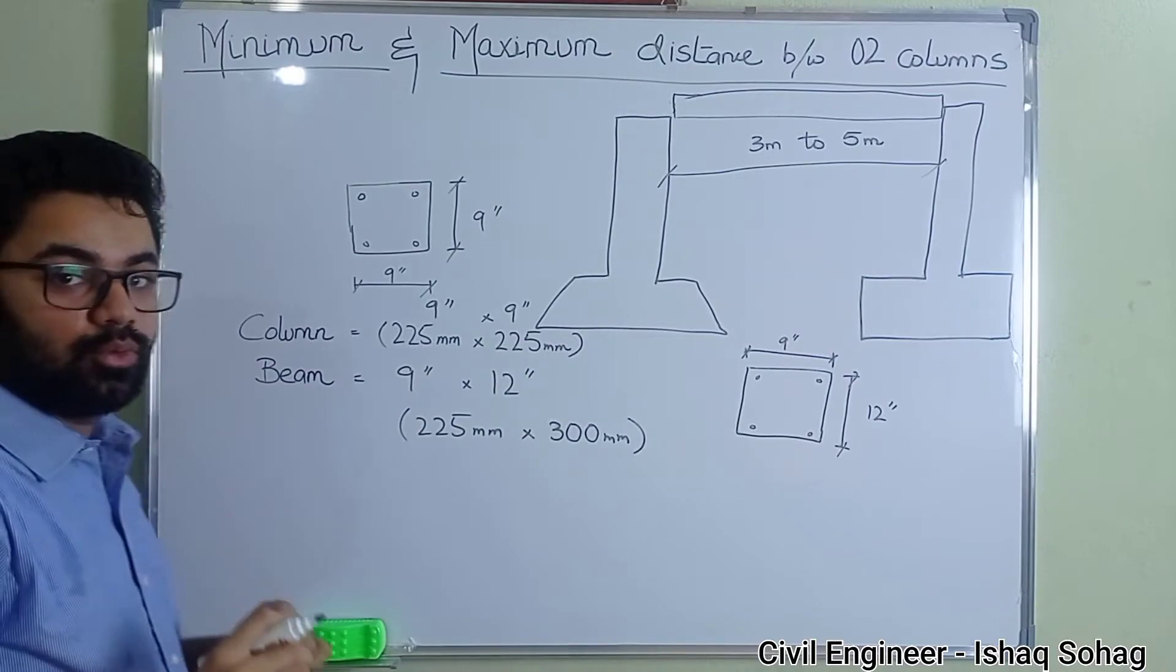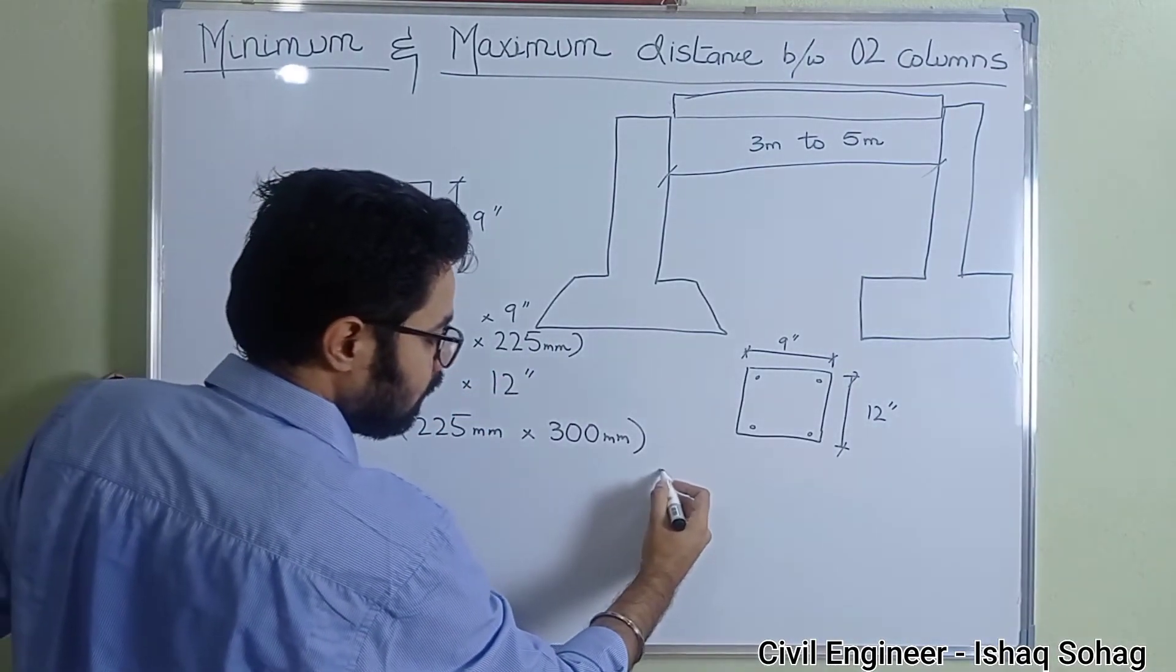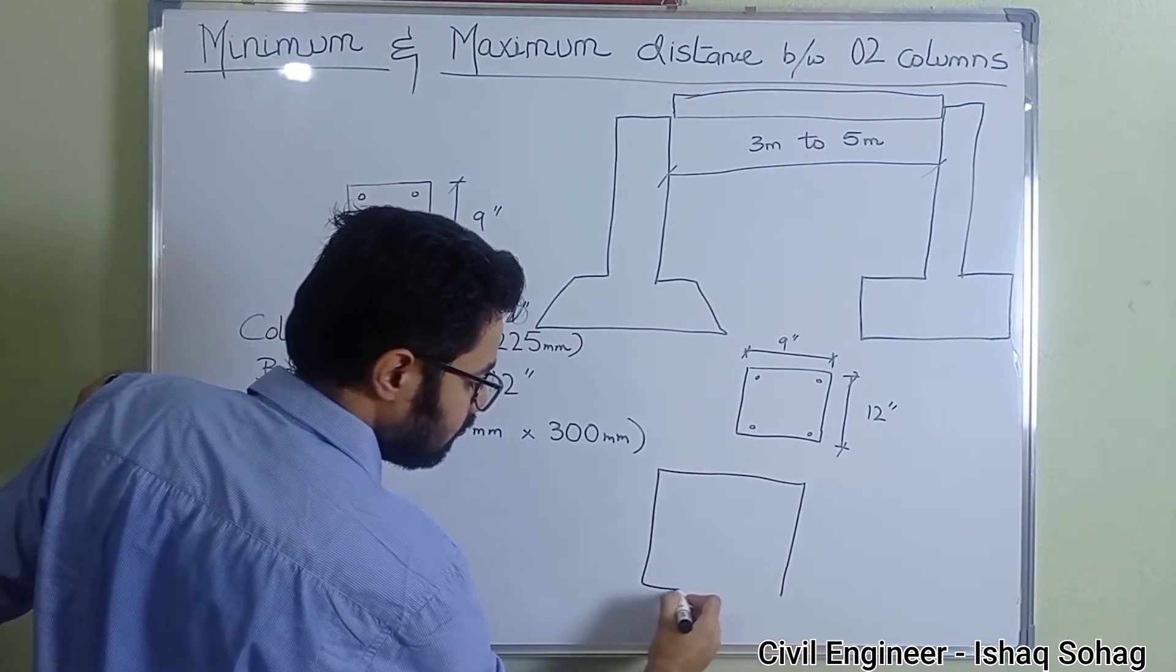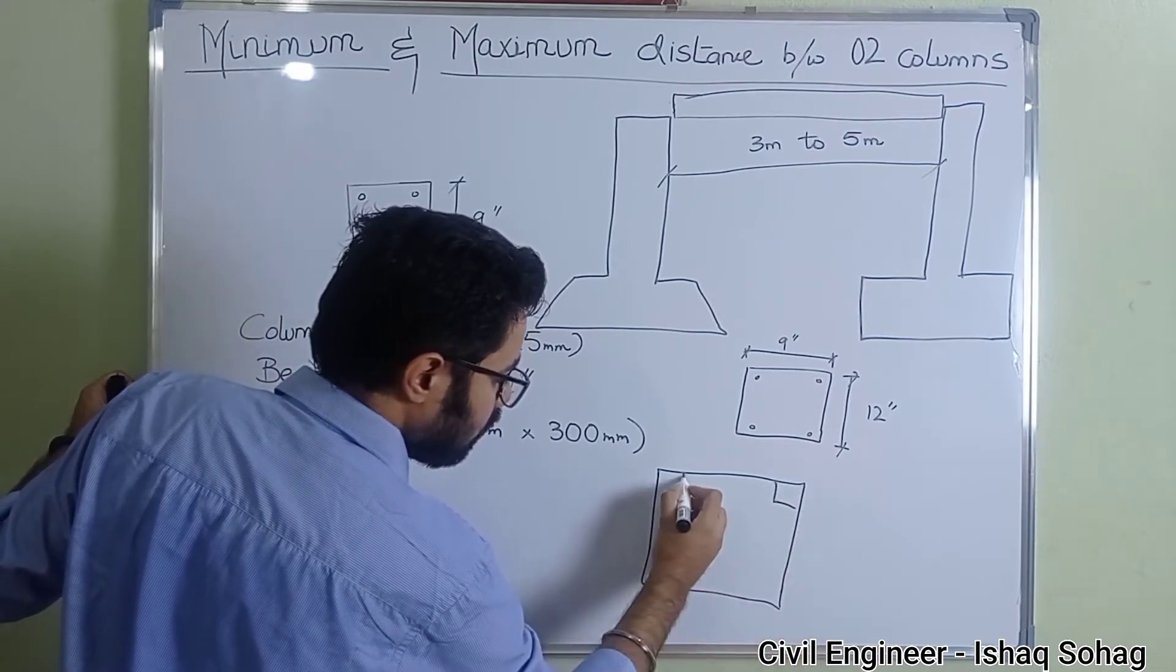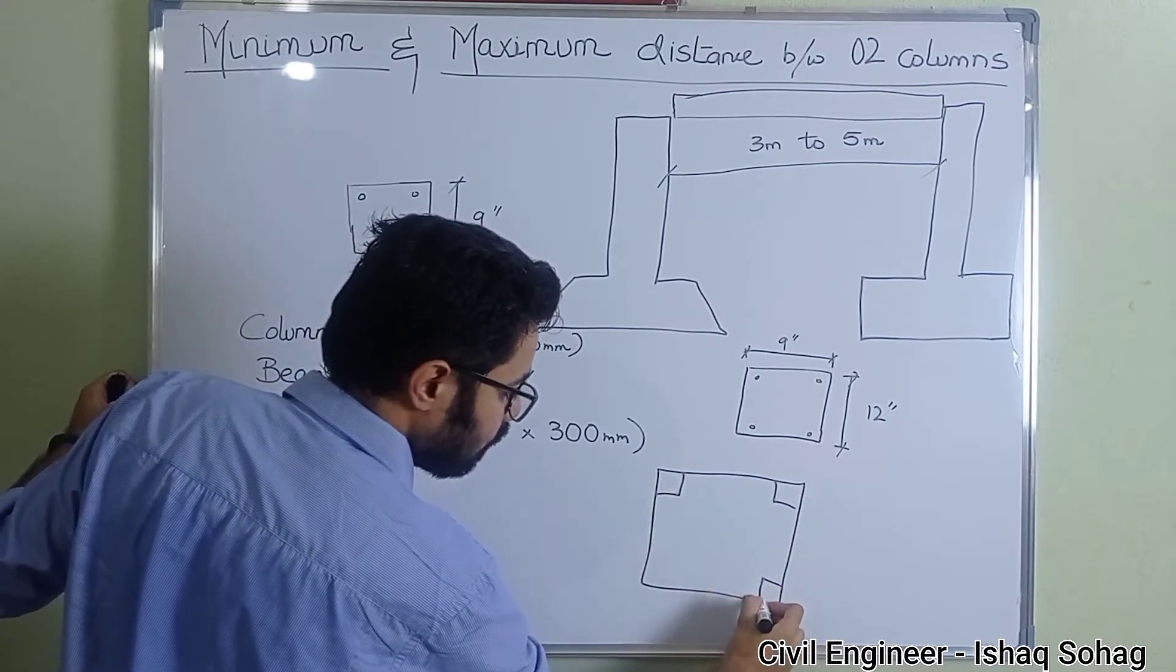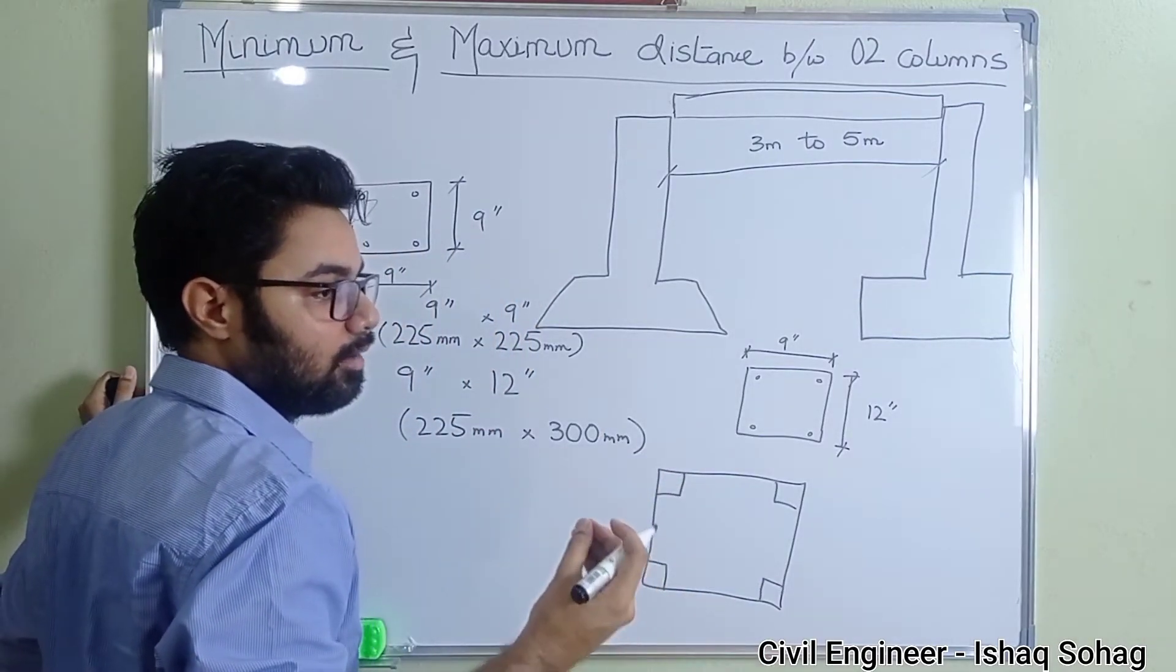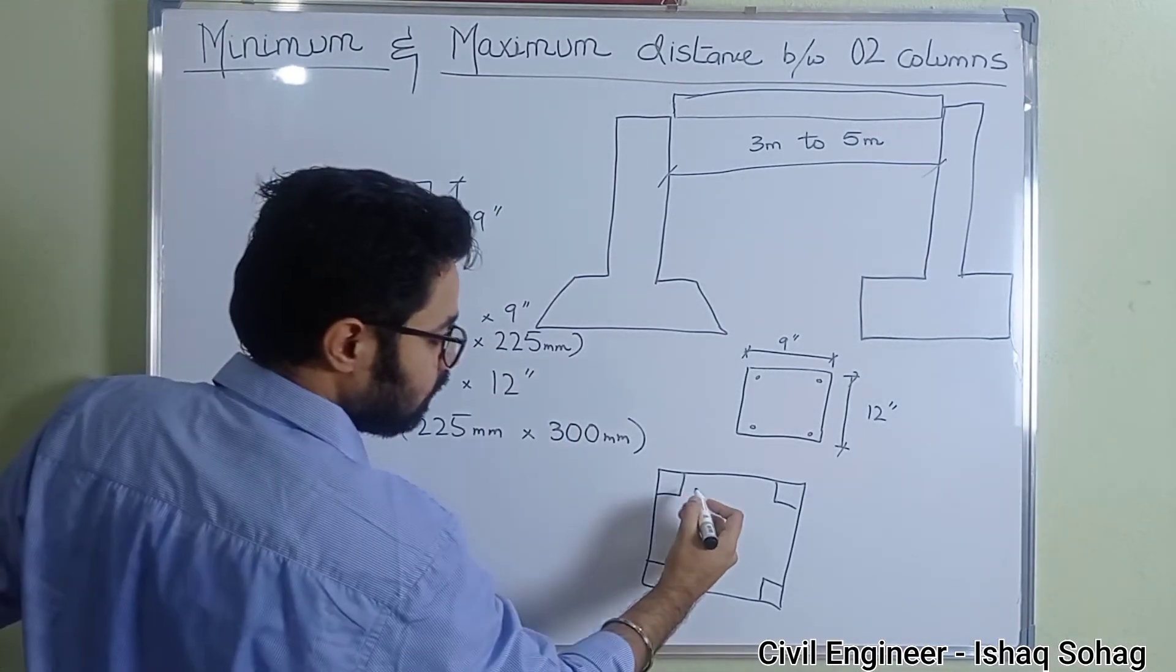Another reason why we always keep 9 by 9 inches is, you know, this is our plan. I'm just giving you an example, this is the plan, we have got columns here. You know that the thickness of walls is always maintained at 225 millimeter or 9 inches.